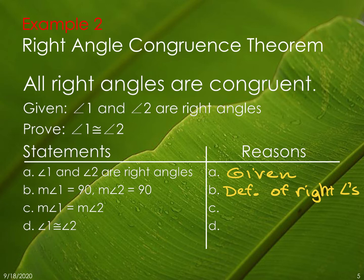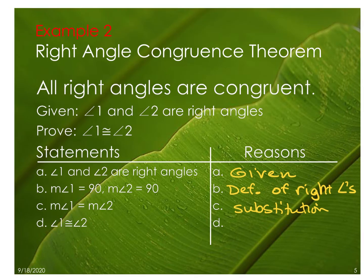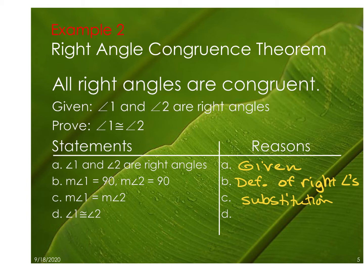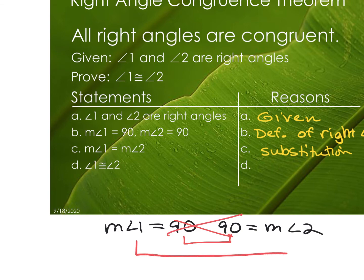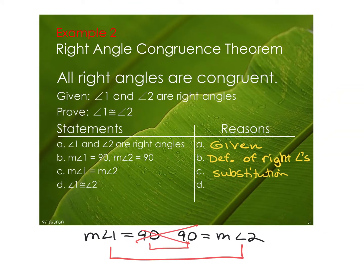Next, because they're both equal to 90, I could do a substitution — that's my next step. You could also say transitive. If it's easier to see the transitive, you could have written step B as 'the measure of angle 1 equals 90 and 90 equals the measure of angle 2.' You see how the 90s cancel out — that's how you go from beginning to end. So this reason can be either substitution or transitive.